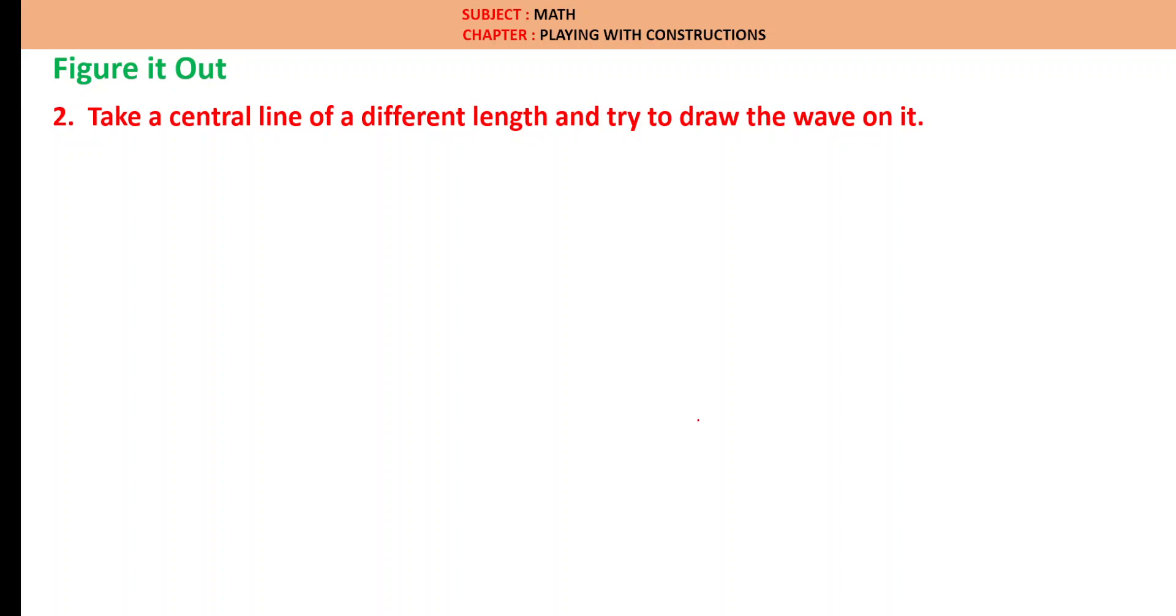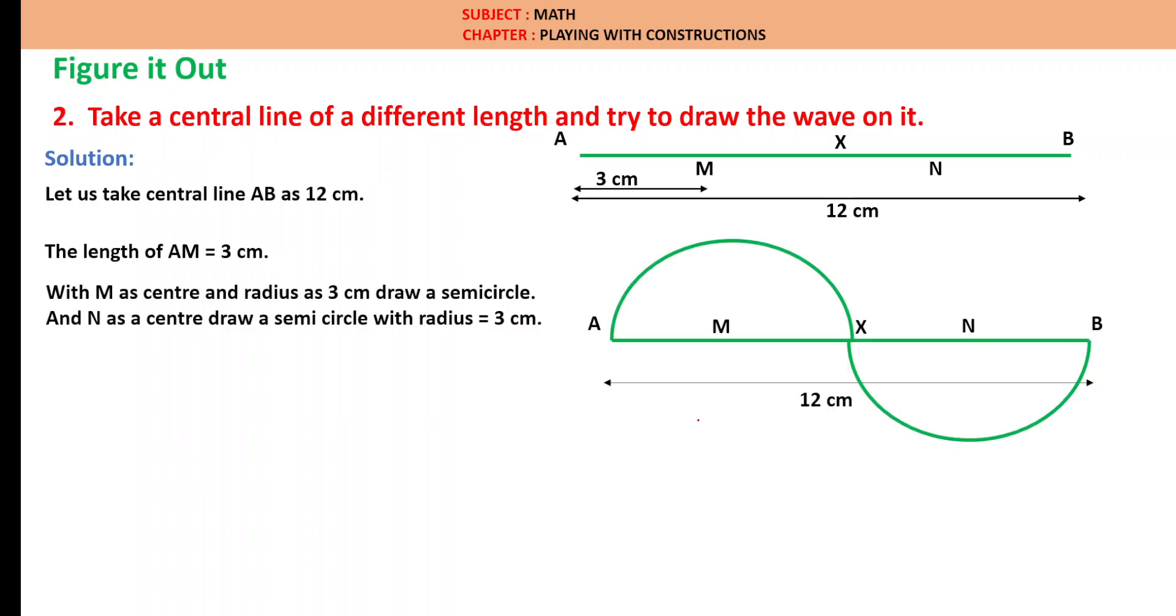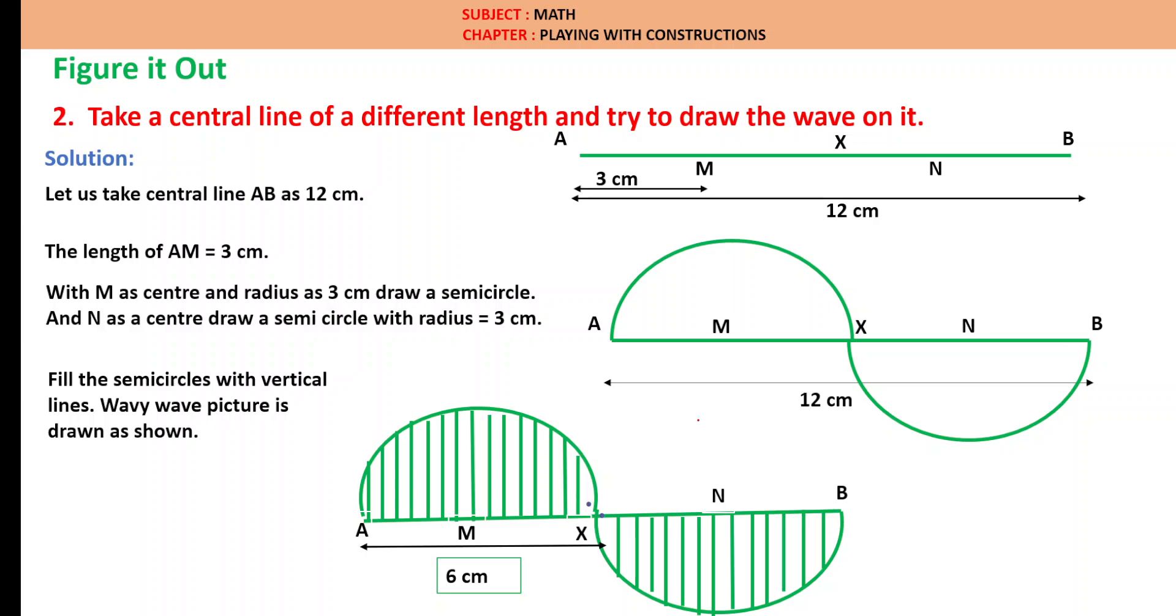Figure it out, Question 2: Take a central line of a different length and try to draw the wave on it. Solution: Let us take central line AB as 12 cm. If AB is 12 cm, then AX will become 6 cm. But we need the radius. So AM will be 3 cm. With M as a center and radius as 3 cm, draw a semicircle. And similarly, N as a center, draw a semicircle with radius 3 cm down as shown in the figure. Fill the semicircle with vertical lines. Wavy wave picture is drawn as shown here. AX is equal to 6 cm.